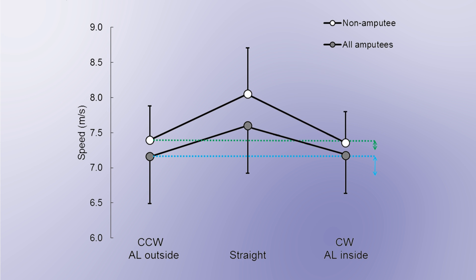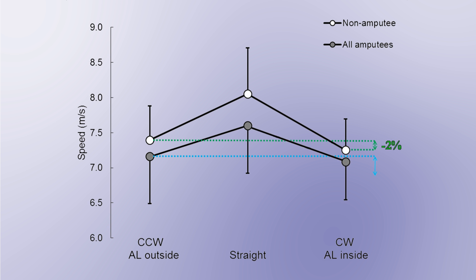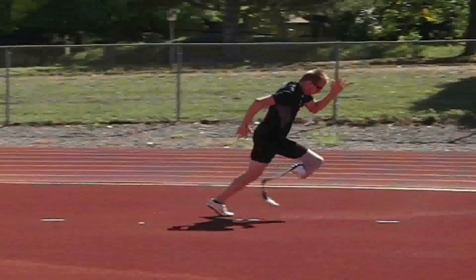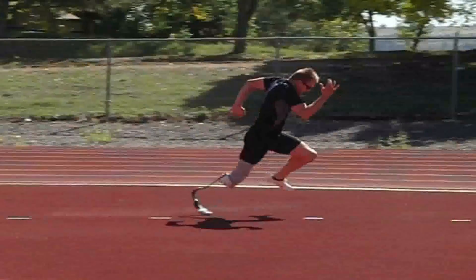Non-amputees ran 2% slower on clockwise compared to counterclockwise curves. Sprinters with an amputation ran 4% slower with their affected leg on the inside compared to the outside of the curve. During curve running, non-amputees and athletes with an amputation had longer contact times with their inside versus their outside leg, suggesting that the inside leg limits curve running performance.